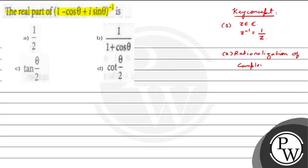So, what does this rationalization of a complex number property tell us? Suppose your z equals x plus i y. Then 1 by z will be nothing but 1 by (x plus i y). Rationalization means we take the conjugate and multiply and divide, that is (x minus i y) divided by (x minus i y). This is known as rationalization of a complex number.